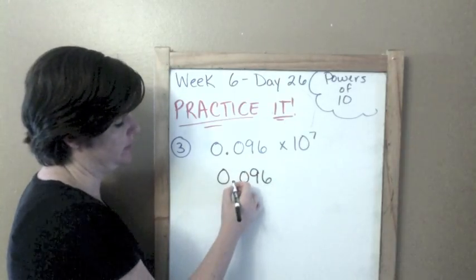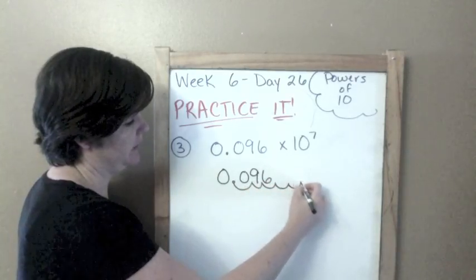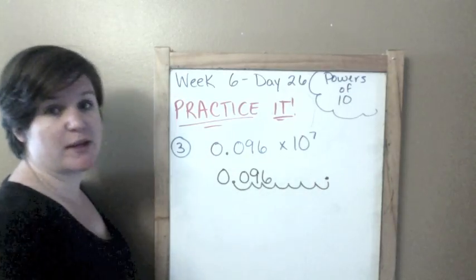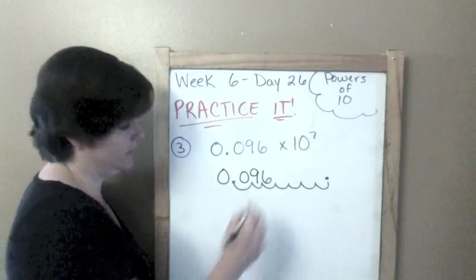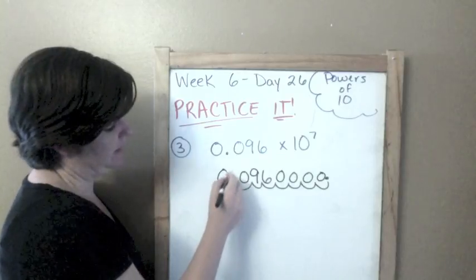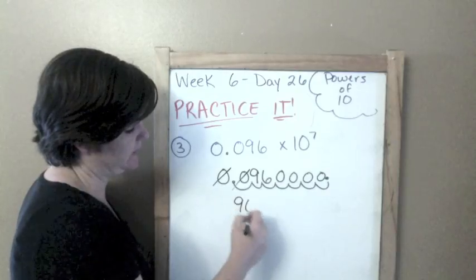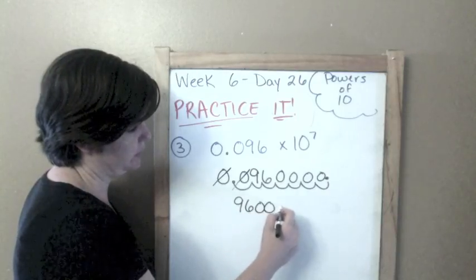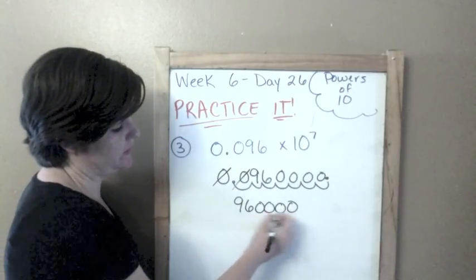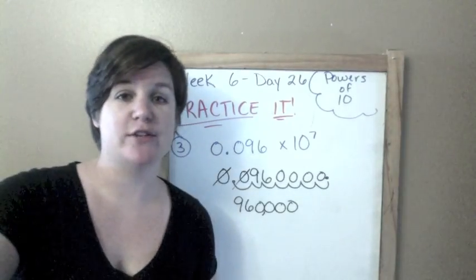Let's make my seven jumps to the right to make it bigger: one, two, three, four, five, six, seven. Place my decimal and what do I put in each of the spaces? Zeros. So to rewrite this number, I'm not going to write these two because they're just zeros and they have no value, so 960,000 is your answer.